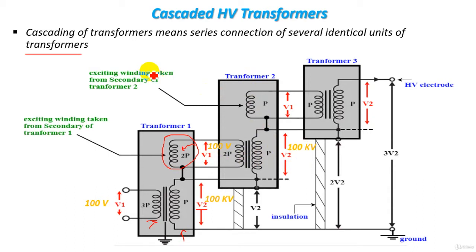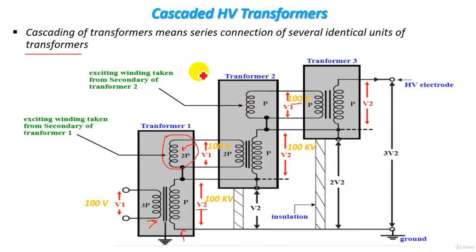Also, we have an exciting winding taken from the secondary of transformer 2, which has the same number of turns as the primary winding of transformer 2. So the voltage applied to this winding is 100 volt, and this voltage is applied to the primary winding of the third transformer. The exciting winding plays an important role in transferring voltage from the second transformer to the third transformer and so on. So the secondary winding of transformer 3 will have voltage V2, which is of course 100 kilovolt.